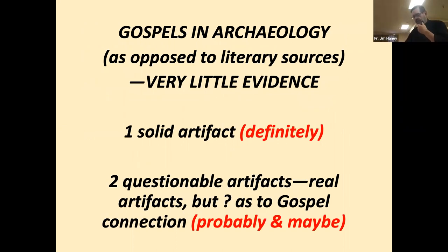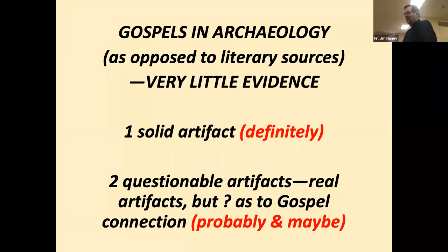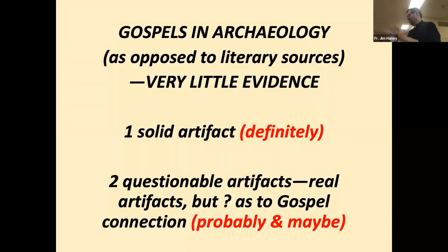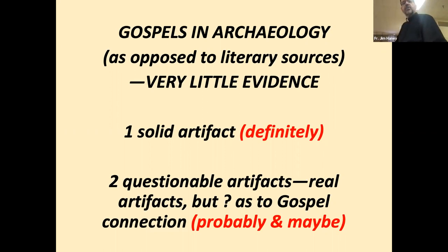We've been talking about the Gospels and how they haven't left a lot of artifacts in the archaeological record. We talked last week about one solid artifact: a tablet with Pontius Pilate's name on it. There are also two bone boxes dug up recently — one may belong to Caiaphas the high priest, and another is inscribed 'James, brother of Jesus, son of Joseph,' though there's significant question about whether that's a forgery. The Gospels, by and large, don't leave much of an archaeological footprint.